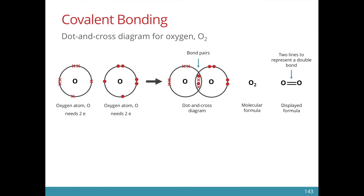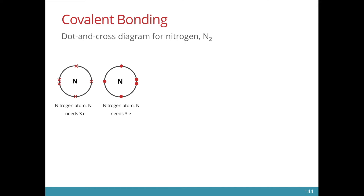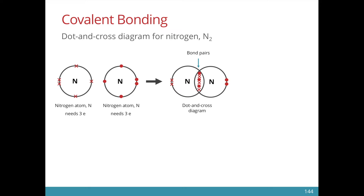We usually represent the electrons of one atom with a cross and the other with dots. The same goes for nitrogen. Nitrogen is in group 5, and it needs three more electrons. You would have guessed that it could share three electrons with another nitrogen atom to form a nitrogen molecule. The triple bond between two nitrogen atoms is strong, and this is also the reason why a nitrogen molecule is chemically unreactive or inert. After drawing the dot and cross diagram, it is important to check that around each atom, we have eight electrons.